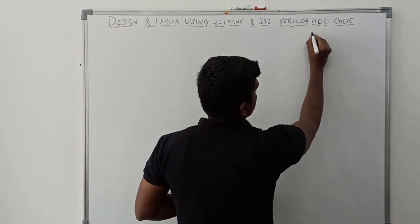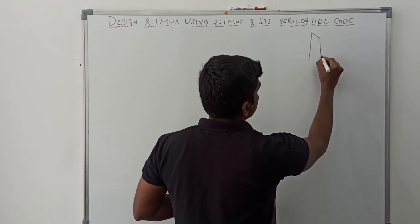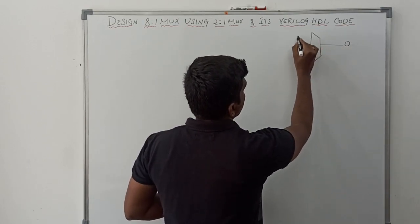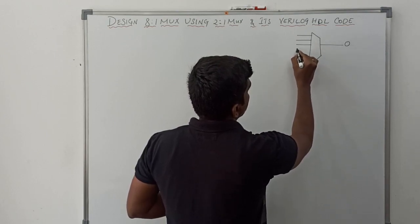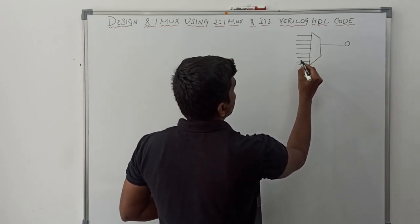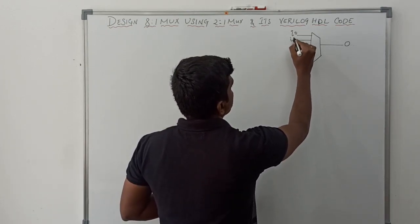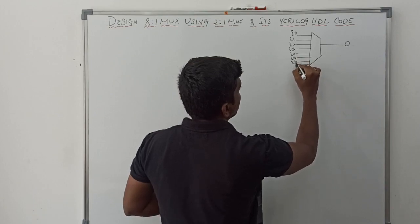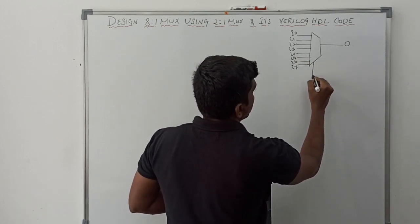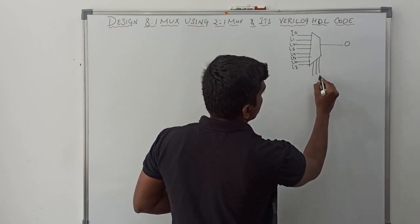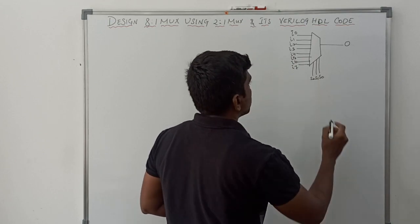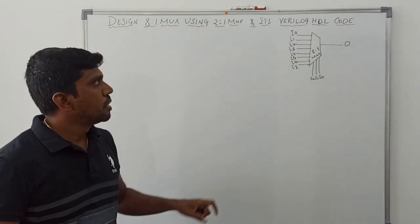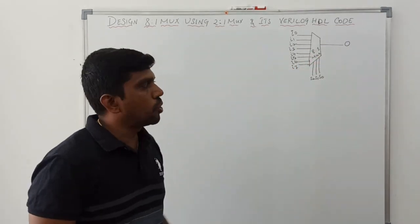First I will draw the block diagram of 8-to-1 multiplexer. It has 8 input lines named I0, I1, I2, I3, I4, I5, I6, and I7. It has 3 selection lines named S0, S1, S2, and 1 output O. So the 8-to-1 multiplexer has 8 inputs, 3 selection lines, and 1 output line.